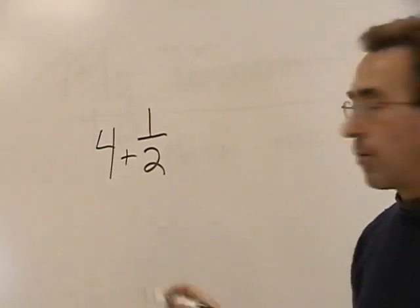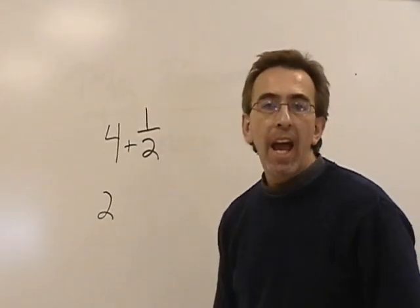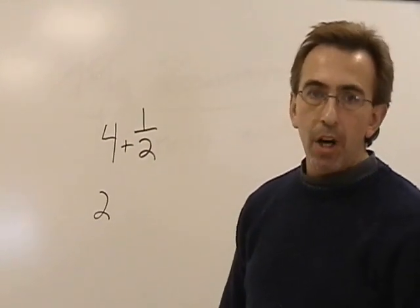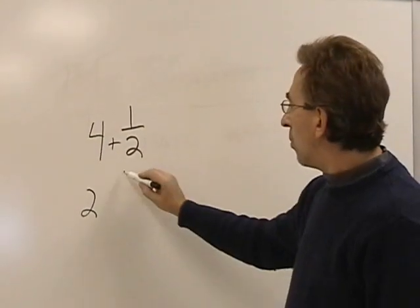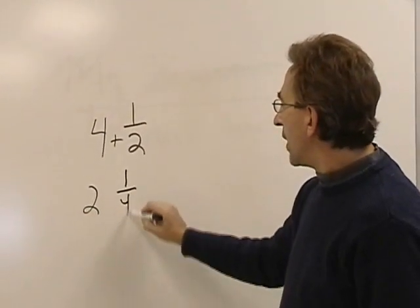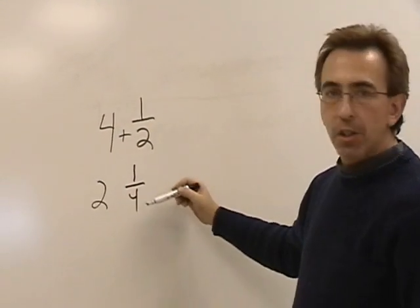And anybody, any student can tell you that half of 4 is 2. And I teach the students that any time you try to find half of a fraction, the rule of thumb is top stays the same, double the bottom. So top stays the same, 1, double the bottom would be 1 fourth. So half of 4 and 1 half is 2 and 1 fourth.